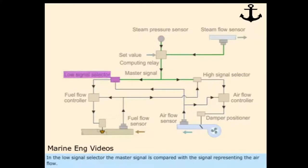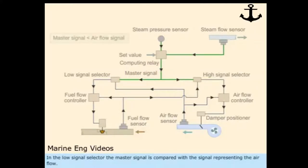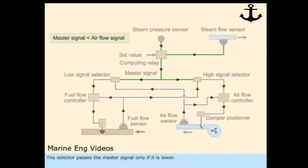In the low signal selector, the master signal is compared with the signal representing the air flow. The selector passes the master signal only if it is lower.